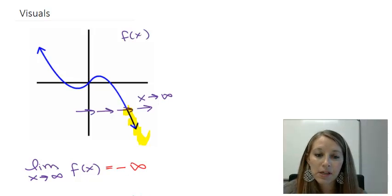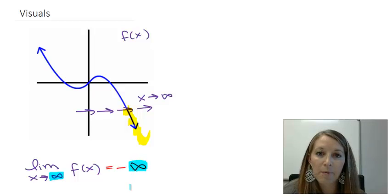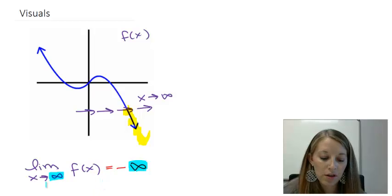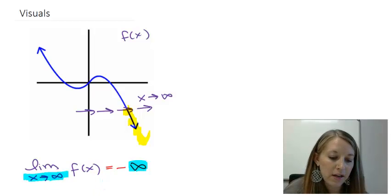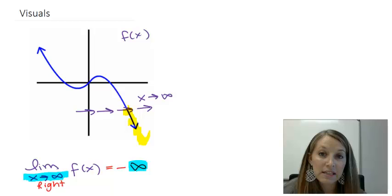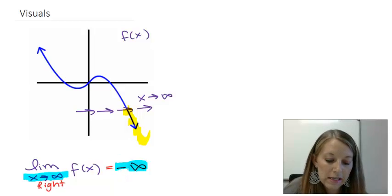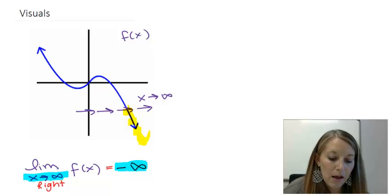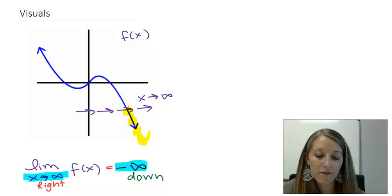Students often get the two infinities mixed up. As X is approaching positive infinity, that means we're looking at the very right-hand side of the graph. Since our graph is decreasing indefinitely there, our answer is negative infinity because it is going down on the right-hand side of the graph.